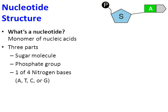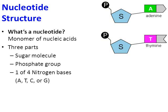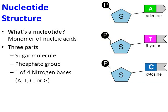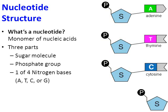The final part of a nucleotide is the nitrogen base. There are four possible nitrogen bases: A for adenine, T for thymine, C for cytosine, and G for guanine. There is actually a fifth nitrogen base called uracil, abbreviated U — that's an RNA nucleotide, which we'll talk about later. The four shown here — A, T, C, G — are DNA nucleotides.